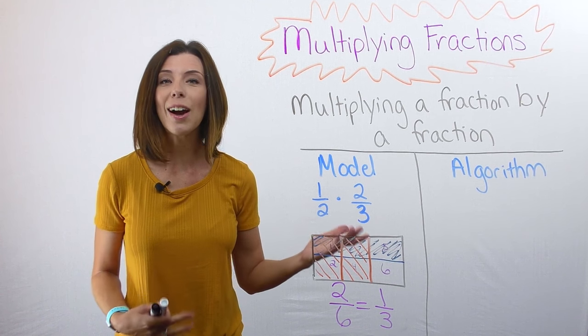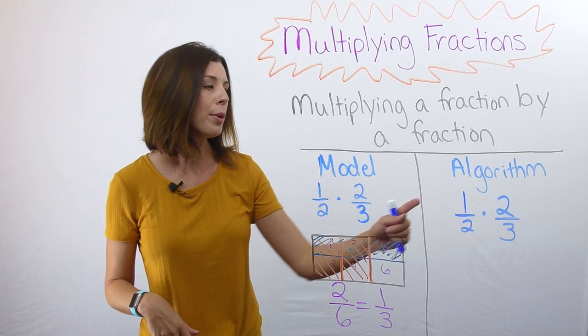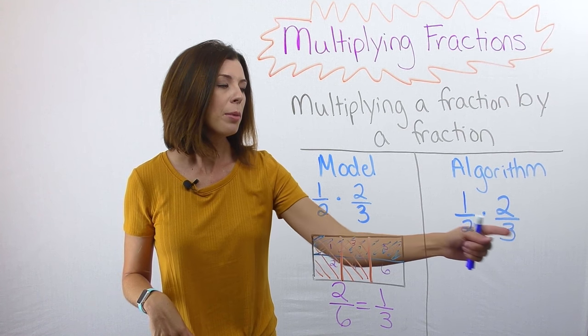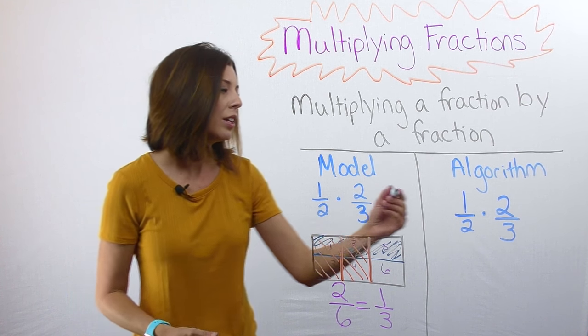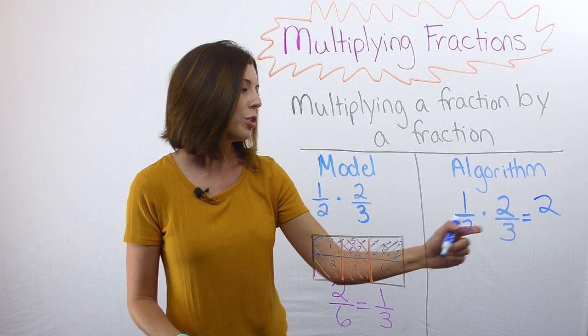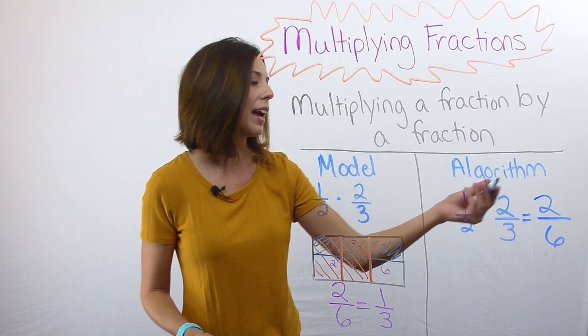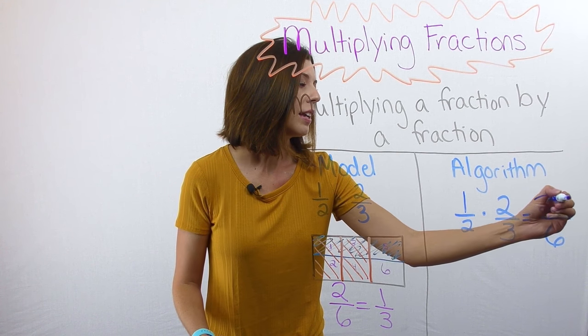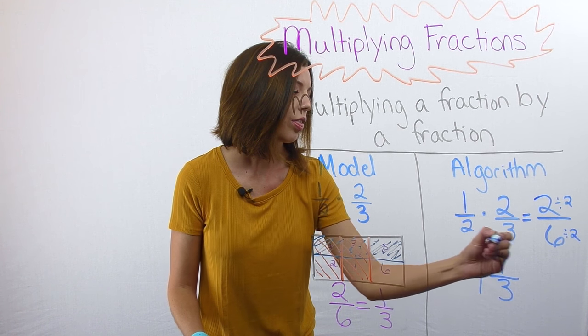Now let's look at the algorithm. For the algorithm, it's going to be pretty straightforward. I'm going to multiply my numerators, multiply my denominators, and then simplify if I can. So I have one times two, which is two, two times three, which is six, and then I'm going to go ahead and simplify. I know that two-sixths can be reduced or simplified down to one-third.